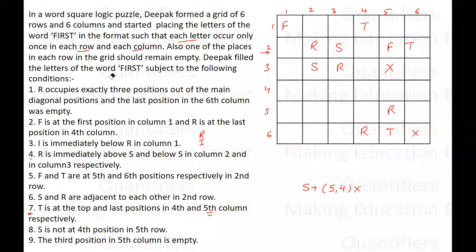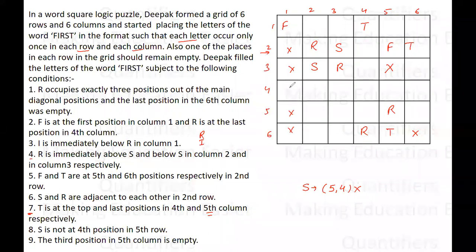Looking at column 1: R cannot be in the second row (R is already at position 2,2), cannot be in the third row (already at 3,3), cannot be in the fifth row (already at 5,5), and cannot be in the sixth row (already in that row at column 4). So the only position where R can be placed in column 1 is the fourth row. And since I is immediately below R in column 1, I will be in the fifth row of column 1.